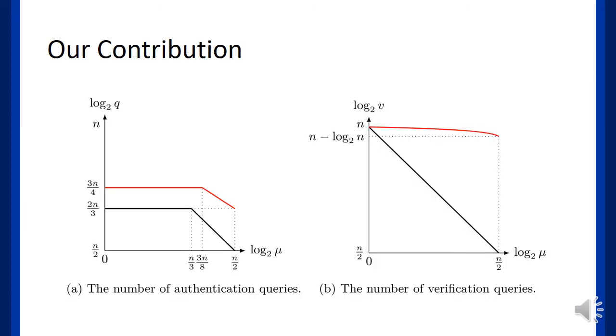Here, the red line is the new security bound of nEHtM. As you can see, our new bound improved the security of nEHtM for any number of faulty nonces up to 2^{n/2}.